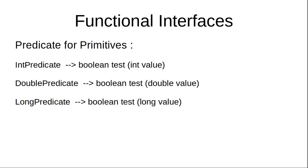There are also flavors of the four pillars exclusively for primitives — for int, double, and long. For Predicate, if your input is of type integer, choose IntPredicate instead of the generic Predicate. If your input is double, choose DoublePredicate. If it's long, choose LongPredicate.